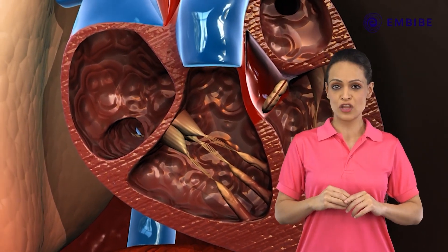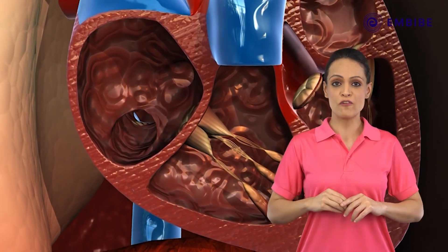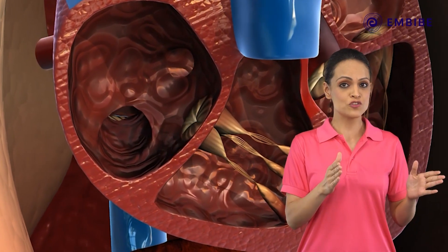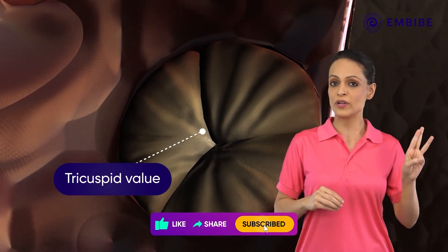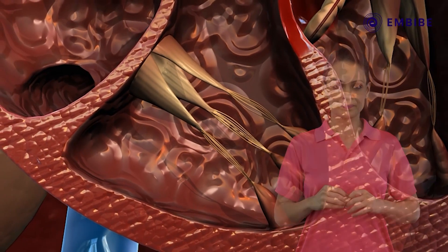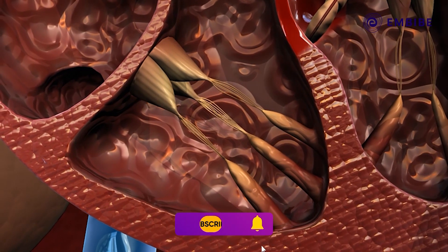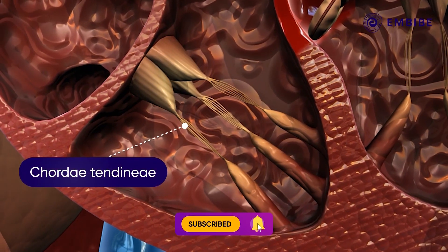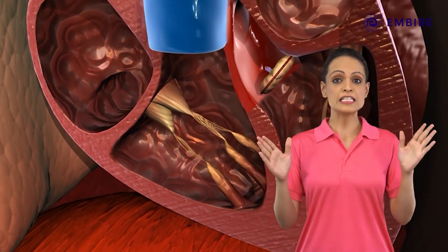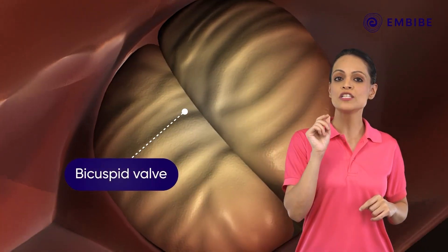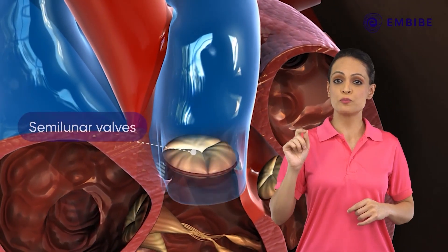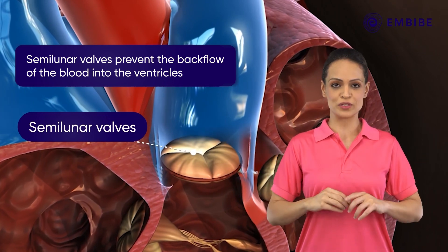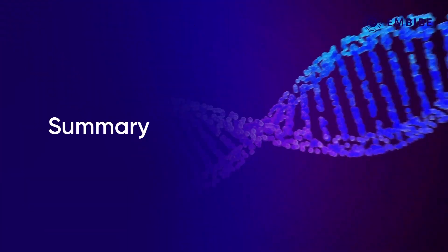There are a number of valves present in the chambers of the heart. The right atrioventricular valve lies between the right atrium and the right ventricle; it is called the tricuspid valve as it consists of three flaps. The pointed ends of the flaps are projected towards the ventricles and are attached to the walls of the ventricles through tendon-like cords called chordae tendineae. The left AV valve is made up of two flaps and is thus called the bicuspid valve. The pulmonary artery and aorta have semilunar valves, which prevent the backflow of blood into the ventricles.